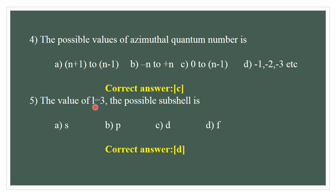When the value of L equals 3, the possible subcell is F. Options include S, P, D, and F. For L = 3, the correct answer is D — the F orbital.